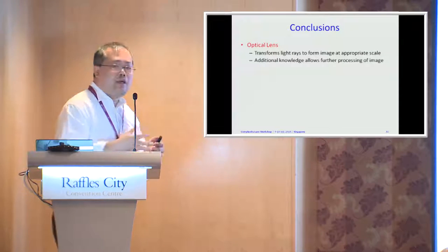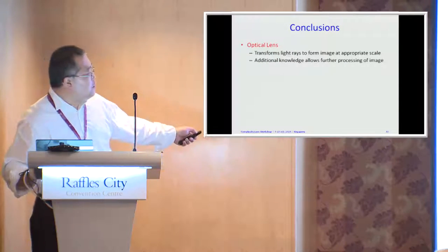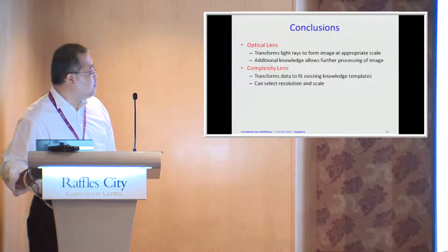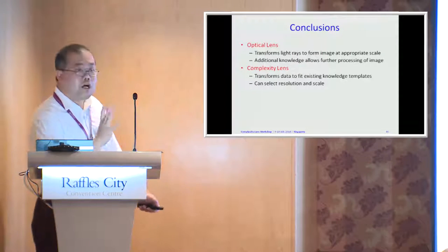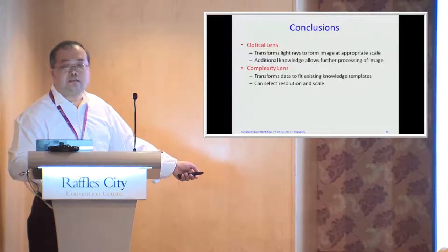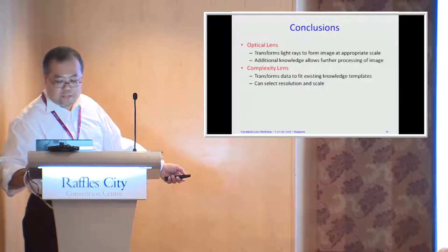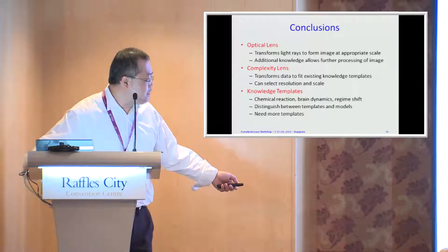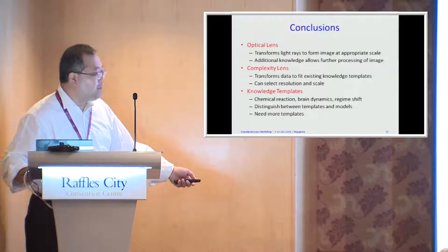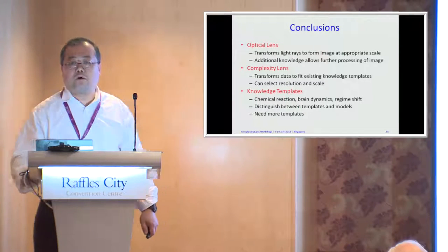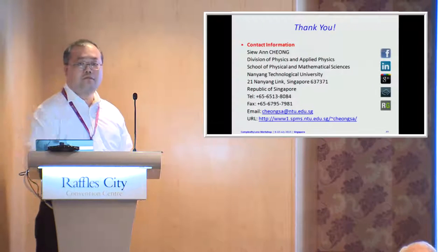In conclusion, I have drawn an analogy between an optical lens and a complexity lens. What an optical lens does is transform light rays to form an image at an appropriate scale, and with additional information it allows further processing. A complexity lens transforms data to fit existing knowledge templates — models do the same thing. The knowledge templates I have given as examples are the chemical reaction template, the brain dynamics template, and the regime shift template. I distinguish between templates and models because models are less permanent. We need more templates, but the only way to get them is to build more models. Thank you.